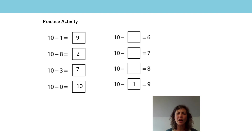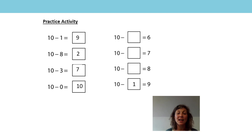And this one: 10 minus something is equal to 8. Yes, 10 is made of 2 and 8, 8 and 2 make 10. 7 — oh, I've used that as well. 10 is made of 3 and 7, 7 and 3 make 10.